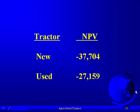Why would the used one have a lower cost? The used tractor is only used for five years, but the new one is used for eight. So can you actually use the net present value as your decision criterion? The cost on the used is only for five years — if you bought that, you'd still have another three years that you'd have to come up with another piece of equipment. We haven't accounted for that, so how do we do that?